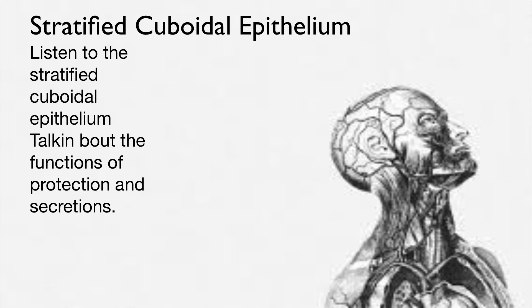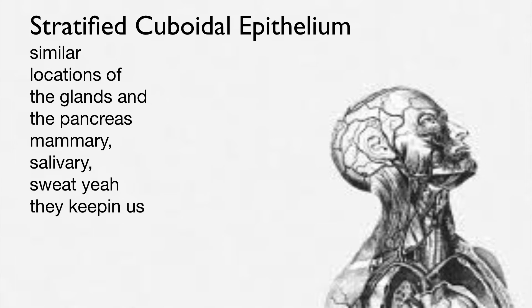Stratified cuboidal epithelium — functions of protection and secretion. Similar locations include the glands such as the pancreas, salivary glands, and sweat glands.